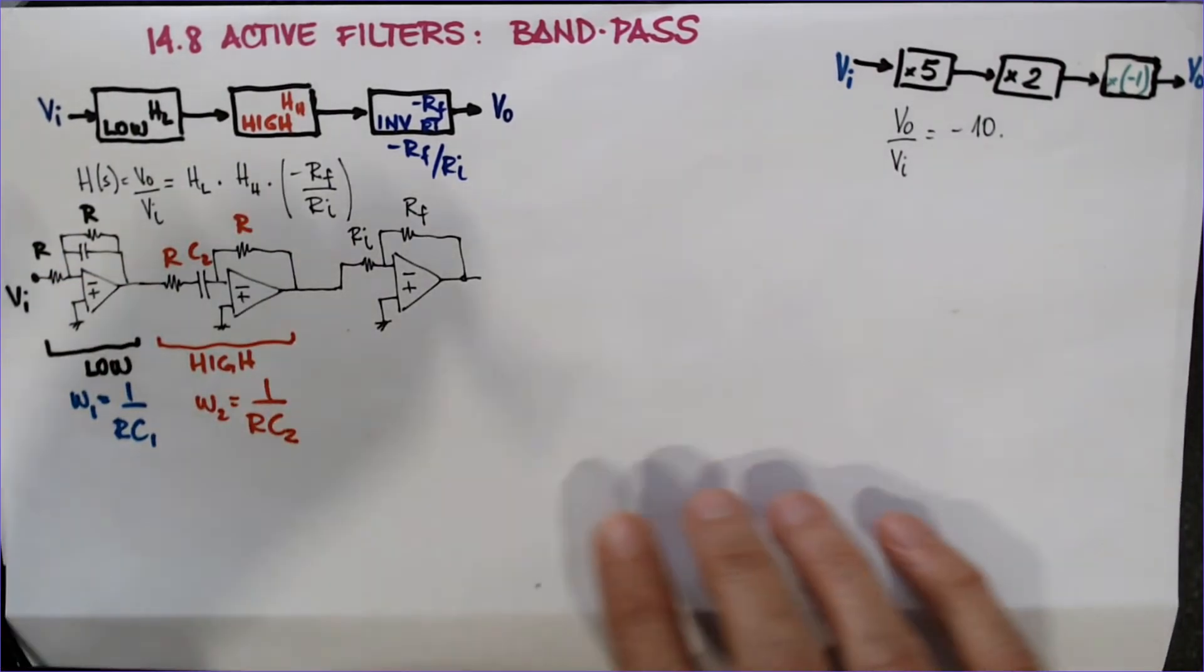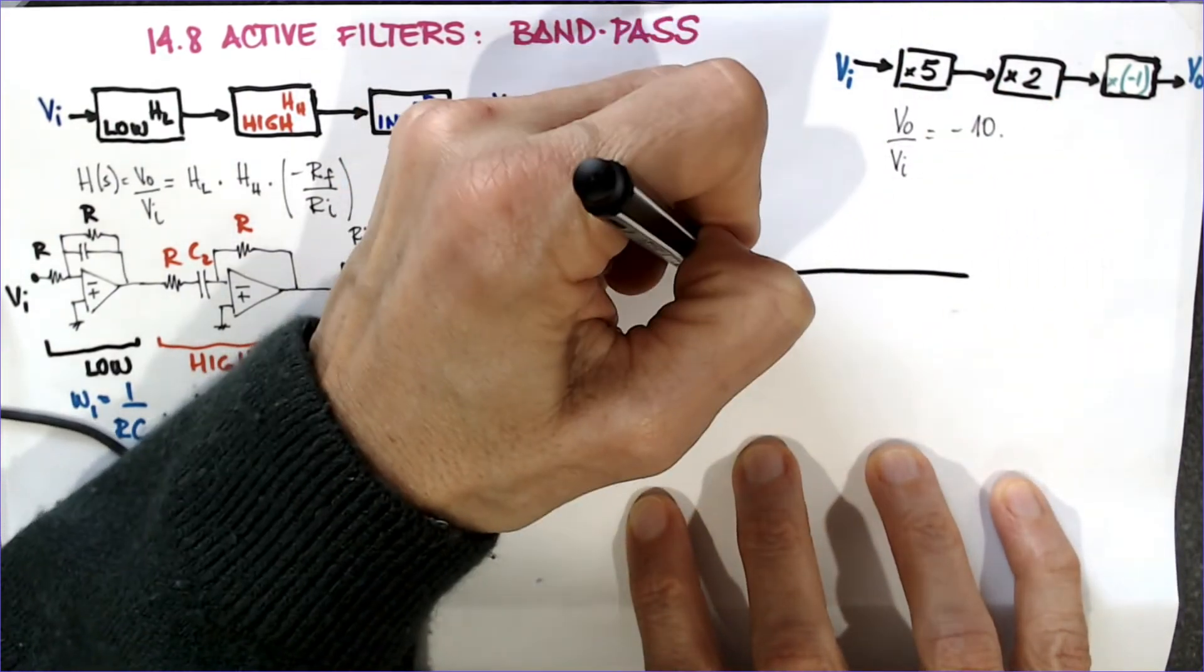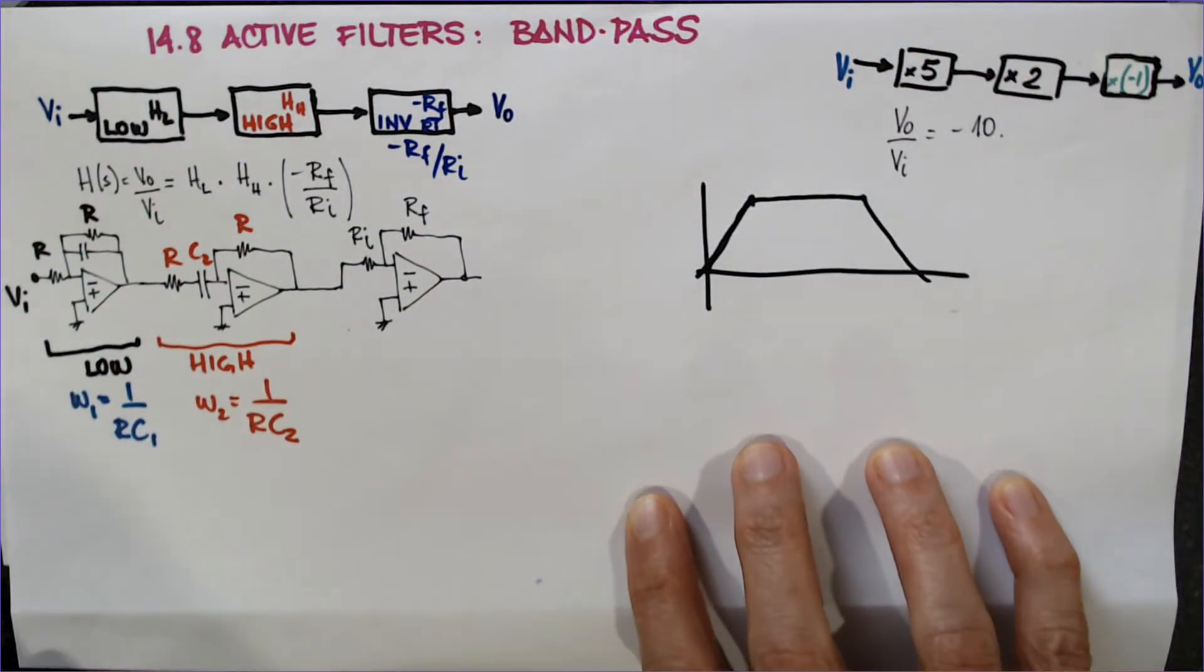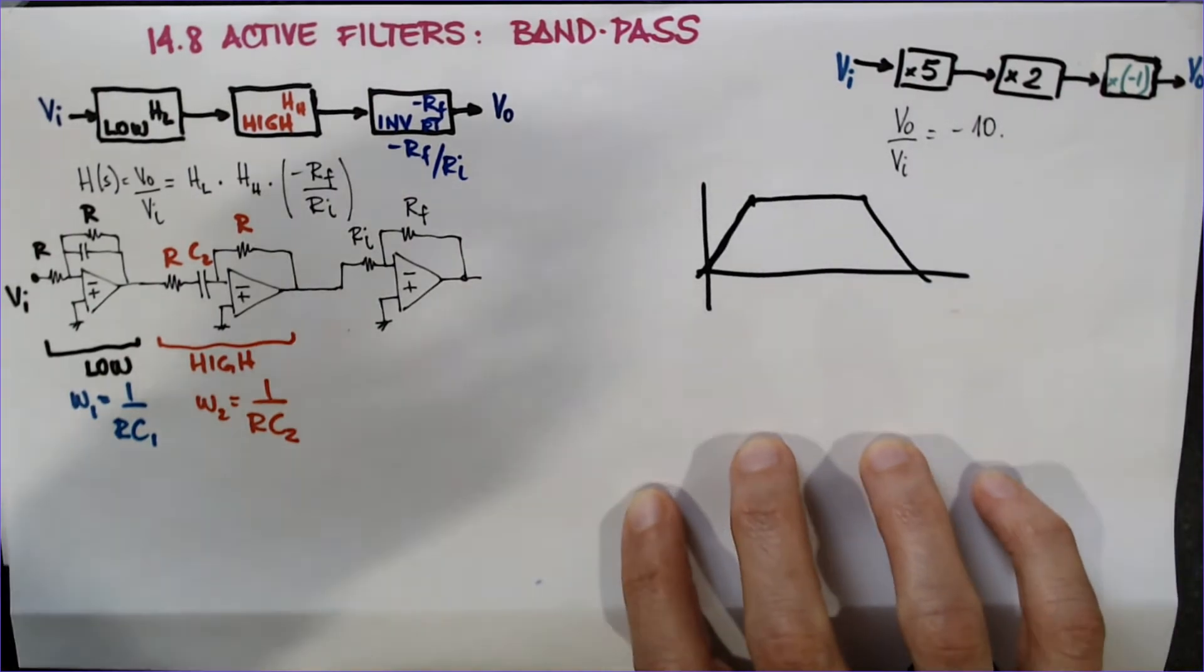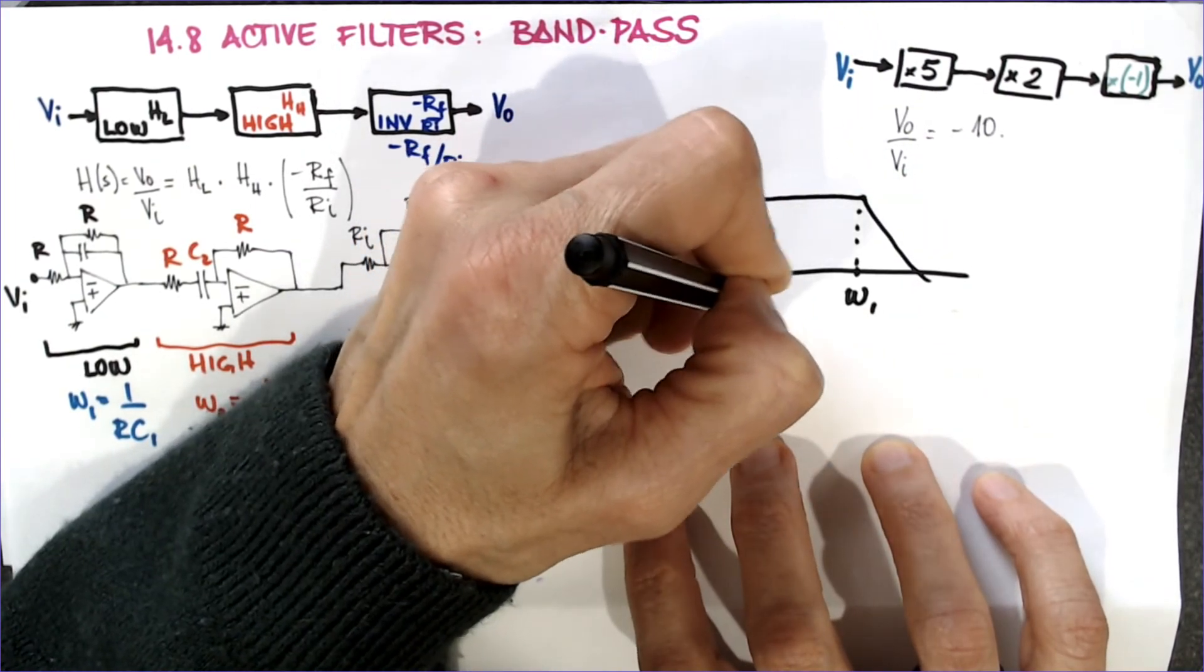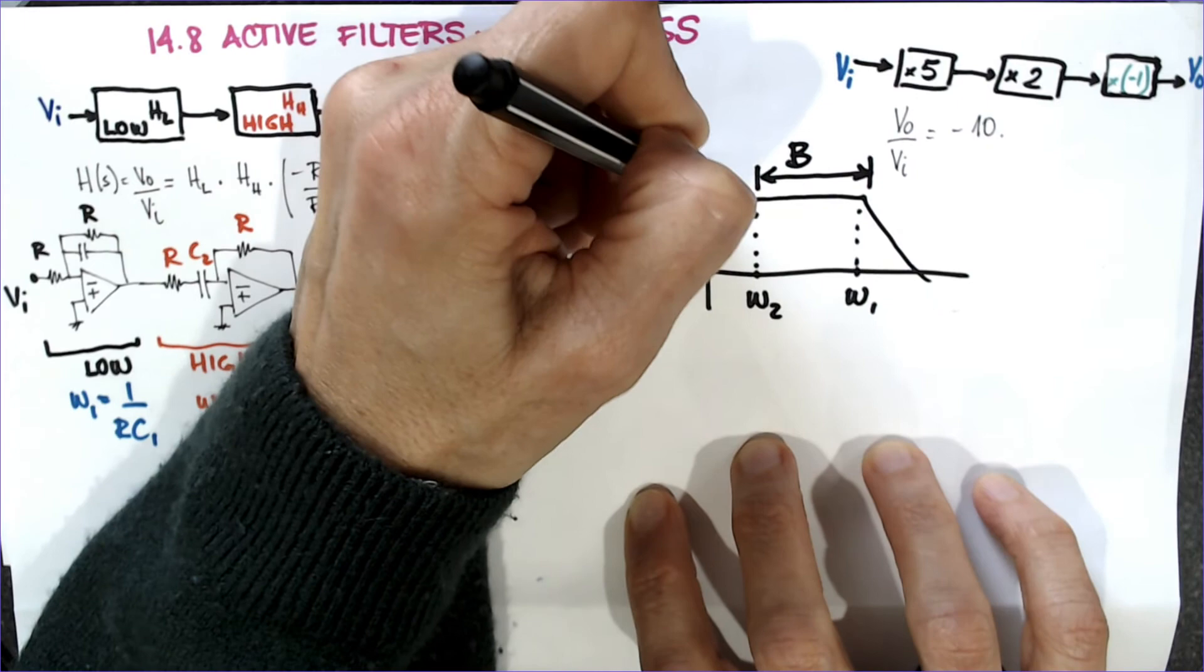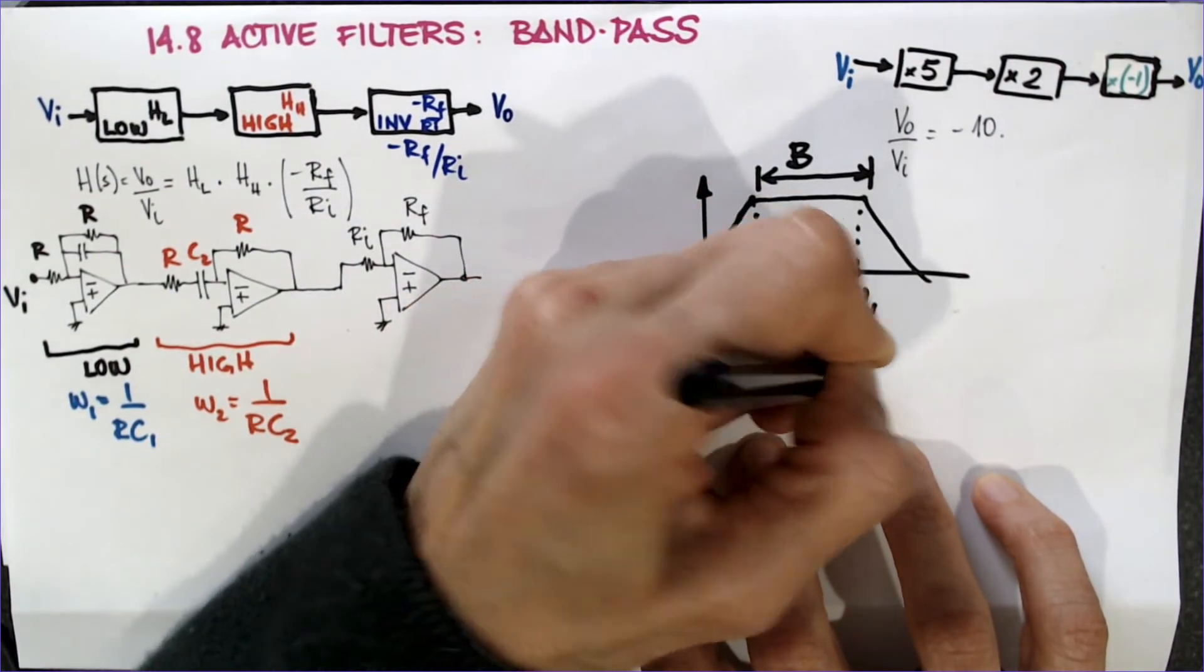So, basically, this bandpass filter will have this kind of magnitude Bode plot. And this is then omega one. And this is then omega two. And the band pass is this difference here. I may have different nomenclature than the book. It will be omega one minus omega two.